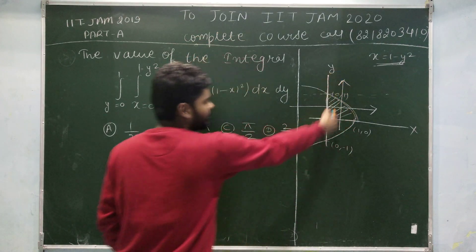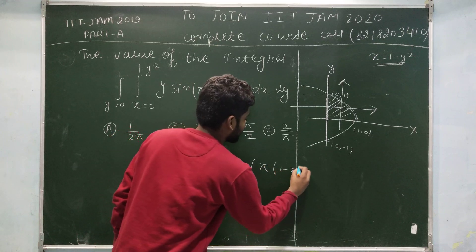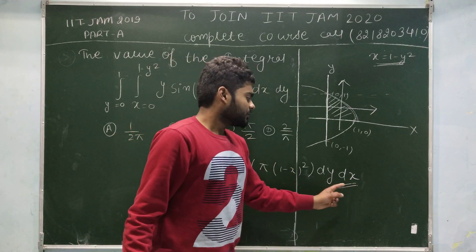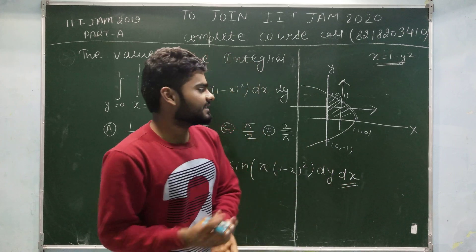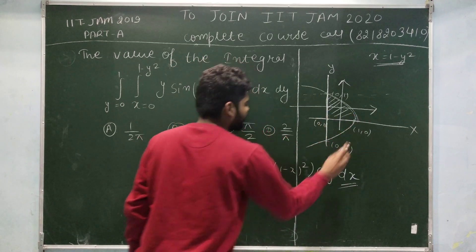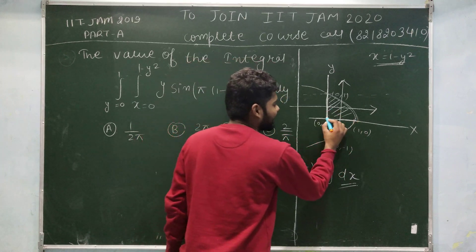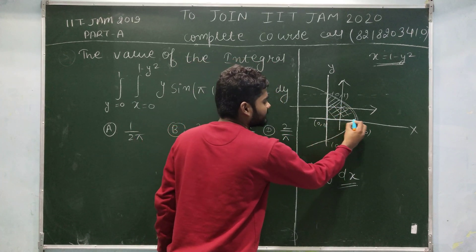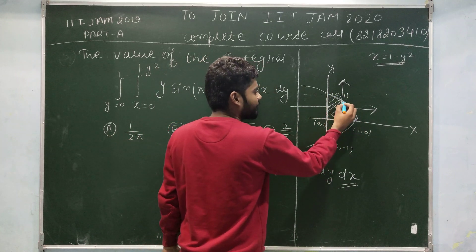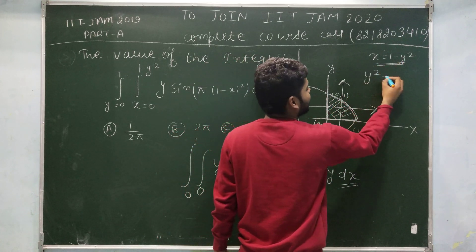To change the order, put a vertical line instead. The new integral becomes double integral of y·sin(π(1-x)²) dy dx, where the outer variable is now x. You can see the points (0,0) and (1,0), so the limits of x vary from 0 to 1. For the variation in y, you enter the region from the line where y equals 0, and exit from the curve. Solving the curve equation gives y² equals 1 minus x.